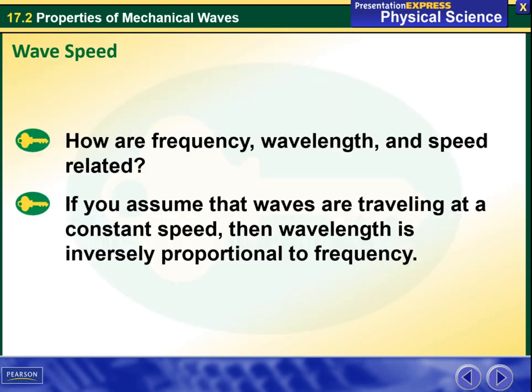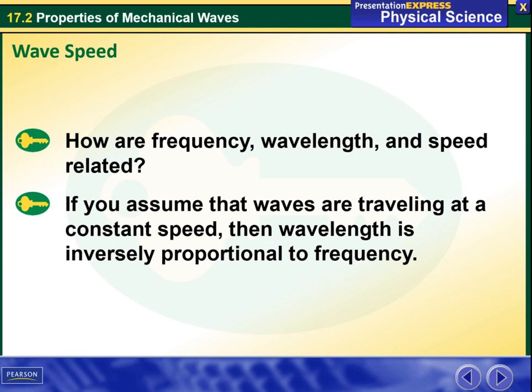How are frequency, wavelength and speed related? If you assume that waves are traveling at a constant speed, then wavelength is inversely proportional to frequency. When the wavelength is in meters and the frequency is in hertz, the units for speed are meters per second. The speed of a wave is also calculated by dividing its wavelength by its period. So speed equals wavelength times frequency.